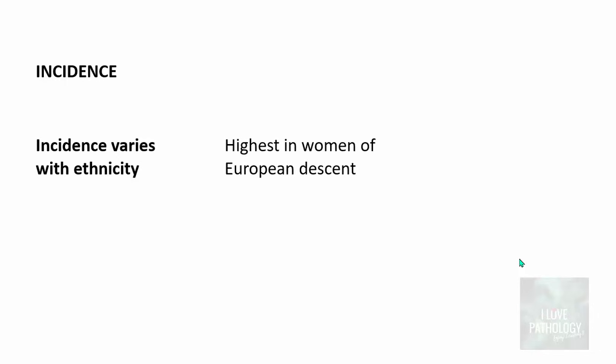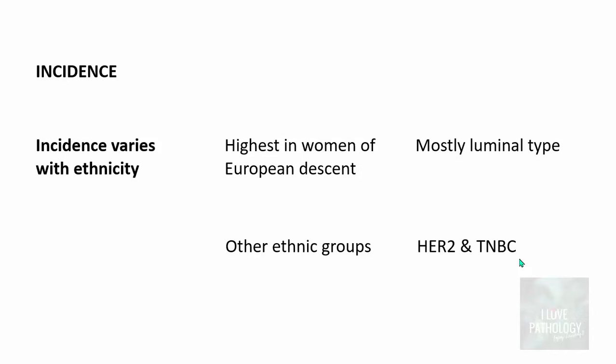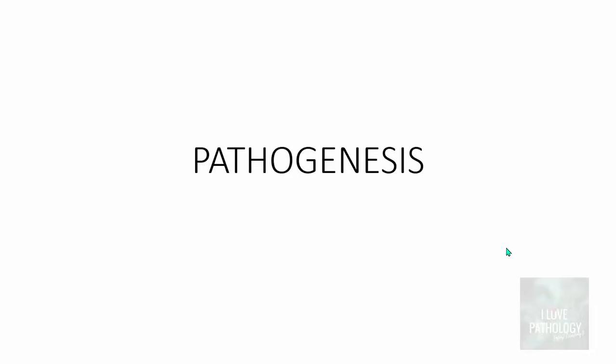The incidence of breast cancer varies with ethnicity. The highest incidence is seen in women of European descent, and these breast cancers are most often luminal type. Other ethnic groups are more commonly associated with HER2-type cancer and triple-negative breast cancers.